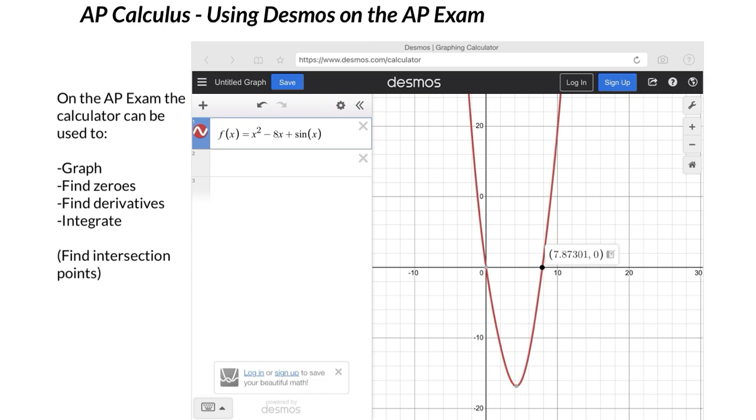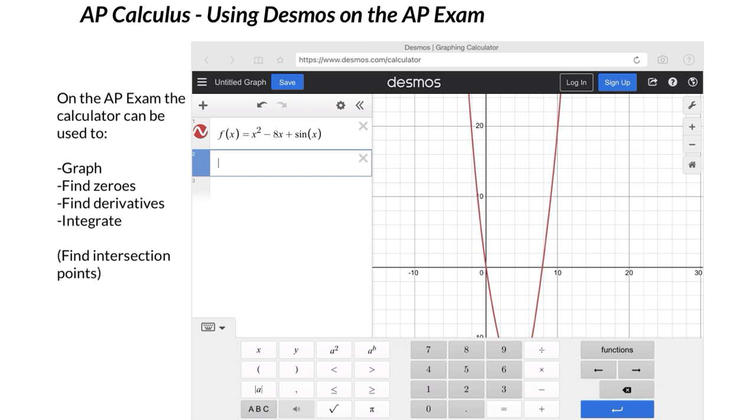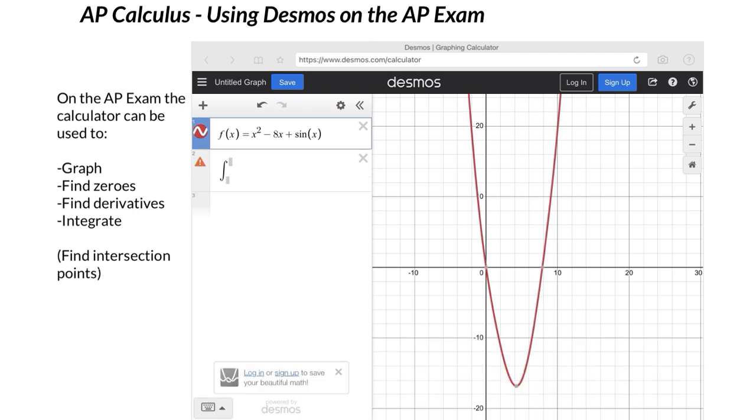Let's say I wanted to know the area between, what was that zero here, 7.87. Let's say I wanted to know the area between that and 10. I can either go to the function menu and get integrate, or if you type I-N-T, notice that it just brings up the integral for us.